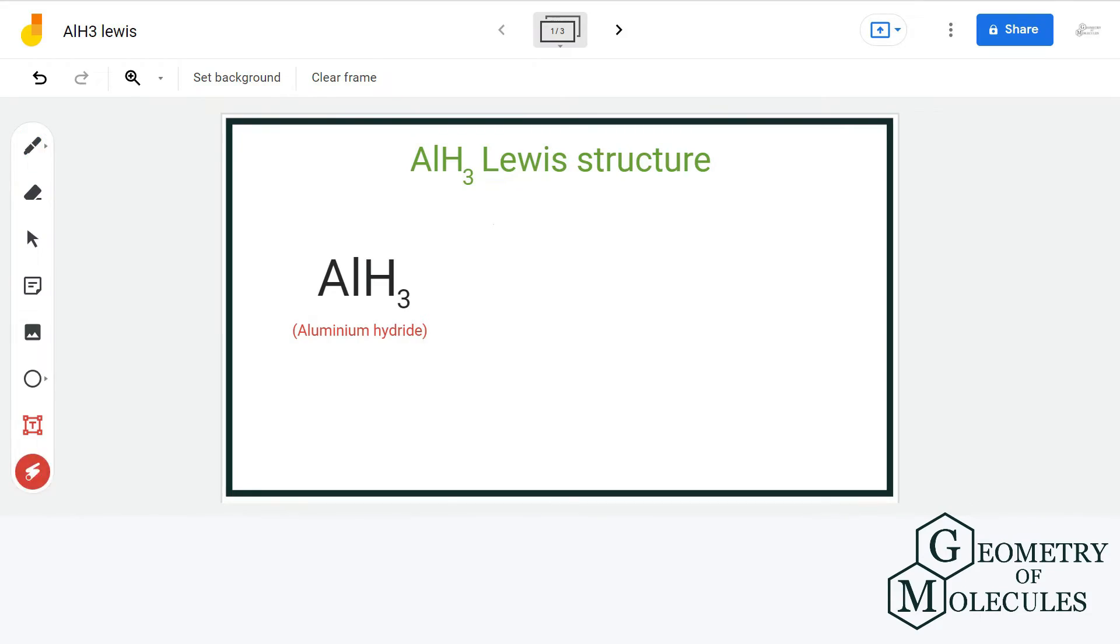Hello guys, welcome back to our channel. In this video we are going to help you determine the Lewis structure of AlH3 molecule. It's the chemical formula of aluminum hydride. For drawing the Lewis structure, let us count the total number of valence electrons.